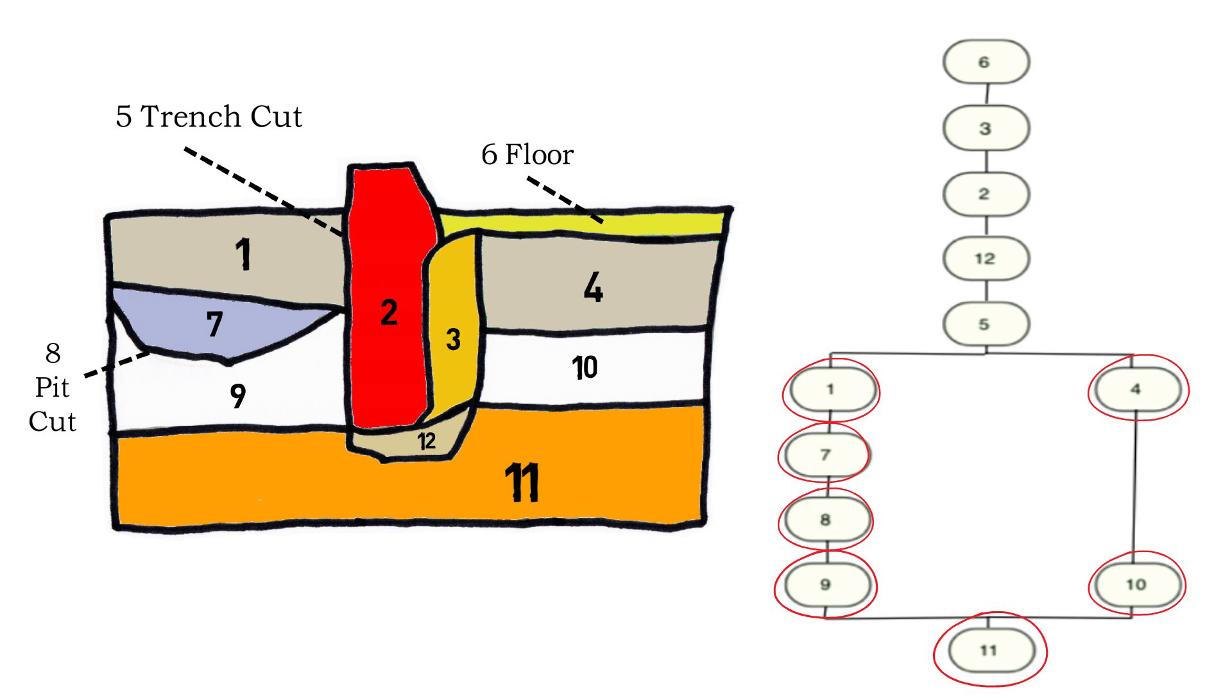Later, another change occurred on site with number 5, a trench that was cut through layers 1, 4, 9, 10 and 11. The construction debris of layer 12 was then deposited, and number 2, a wall, was constructed, followed by the backfill of layer 3.